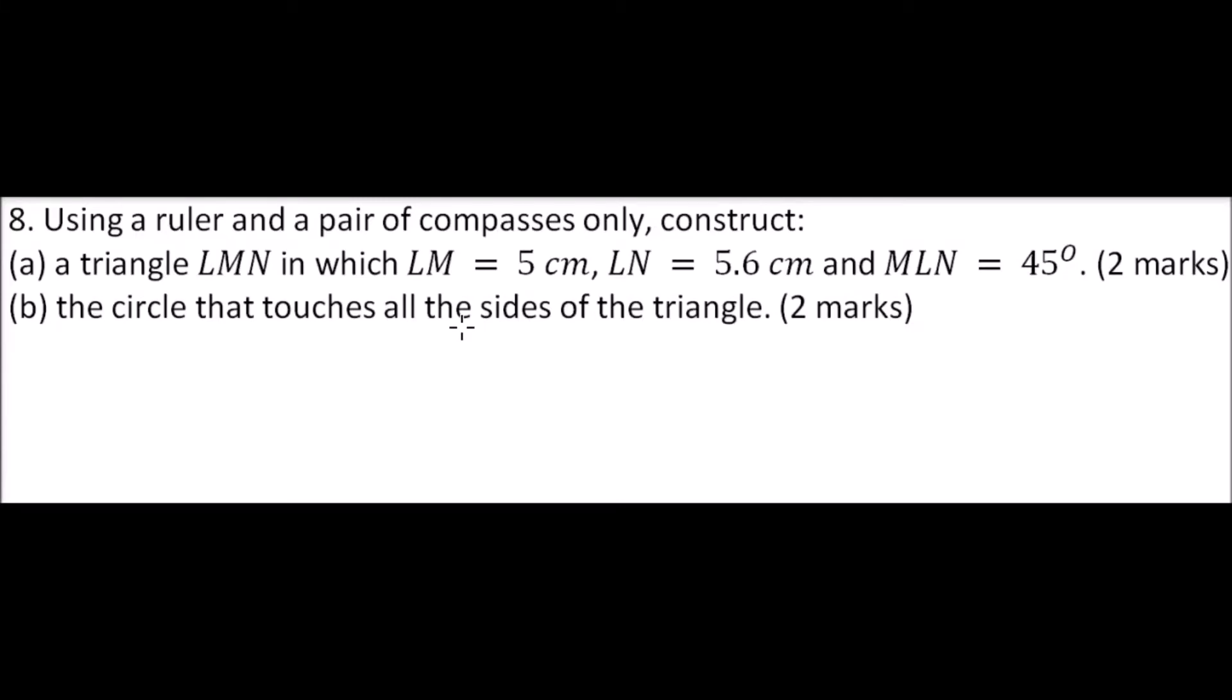So question number 8. Using a ruler and a pair of compasses only, construct a triangle LMN in which LM is equal to 5 cm, LN is equal to 5.6 cm, and angle MLN is equal to 45 degrees, so that you get 2 marks. The circle that touches all the sides of the triangle, you get 2 marks.